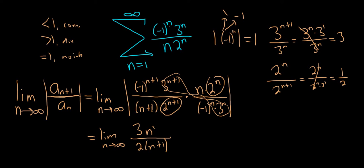So it looks like these are both polynomials, and they're both degree 1. And the degrees are the same. So the answer is the ratio of the leading coefficients. So in this case, it's 3 over 2, which is greater than or equal to 1, so diverges by the ratio test.